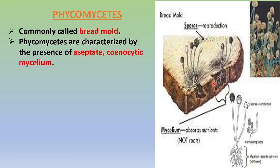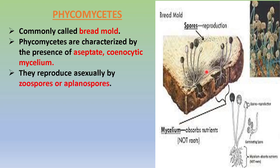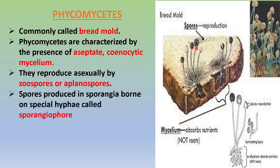These are saprophytes, absorbing the organic matter of the bread, and these are the reproductive structures which stand erect when it is time to reproduce. They reproduce asexually by zoospores or aplanospores. When it comes to asexual mode of reproduction, they will form zoospores or aplanospores — here you can see these are the spores produced within structures called sporangia.